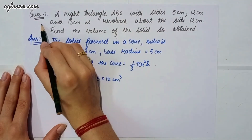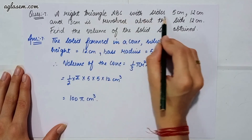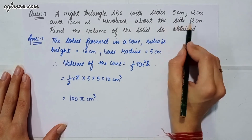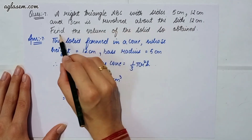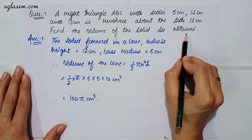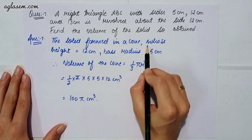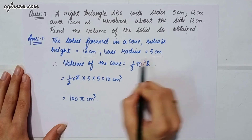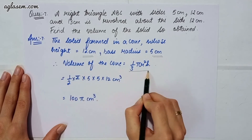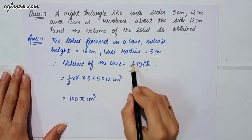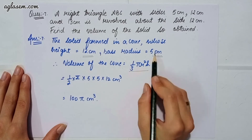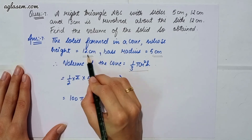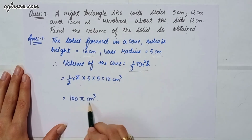Moving to our seventh question: a right triangle ABC with sides 5 cm, 12 cm, and 13 cm is revolved about the side 12 cm. Find the volume of the solid so obtained. The solid formed is a cone whose height is 12 cm and radius is 5 cm. Volume of cone = 1/3 × π × r² × h = 1/3 × π × 5 × 5 × 12 = 100π cm³.